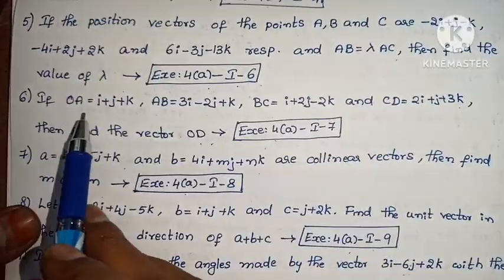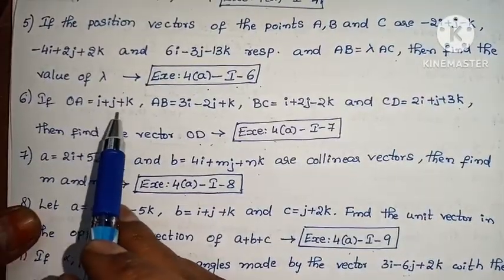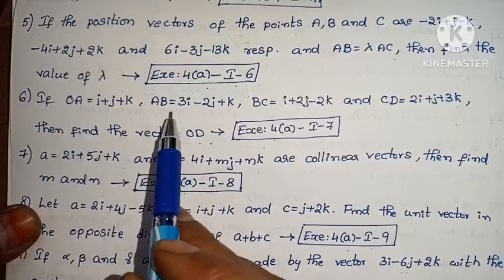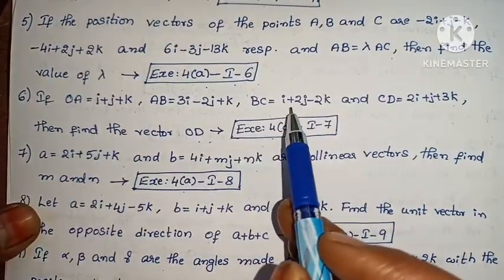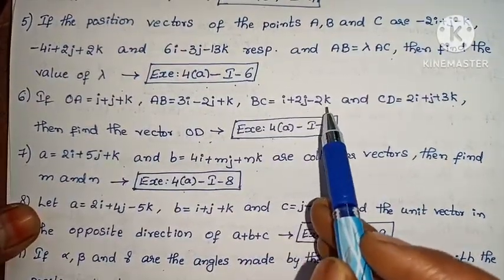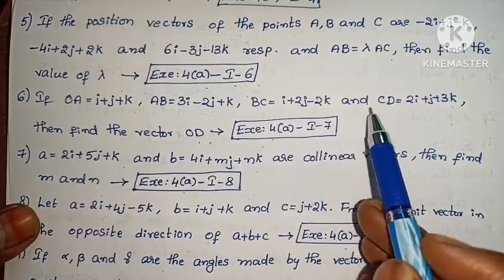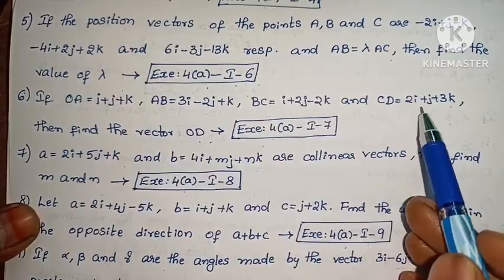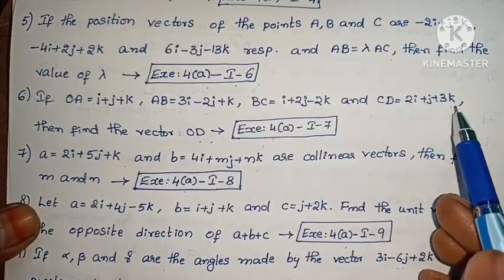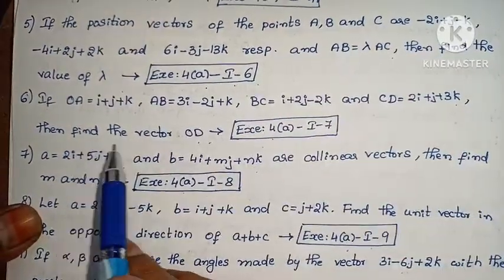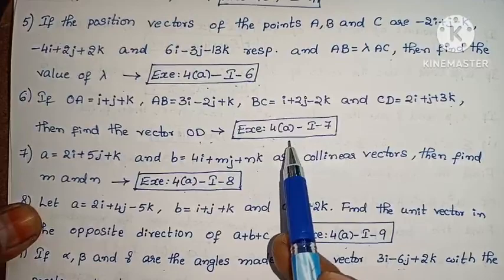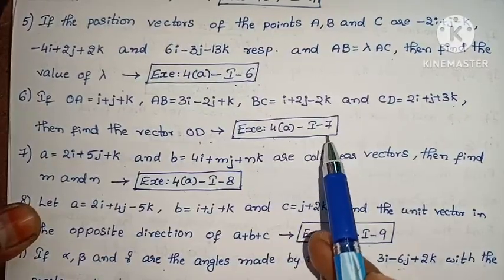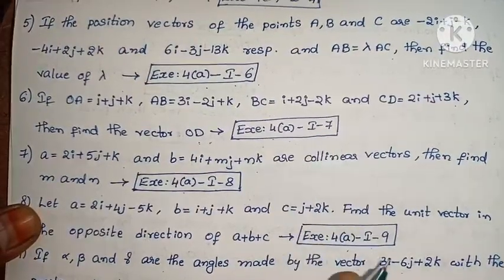Next: If OE equals to i + j + k, AB equals to 3i minus 2j + k, BC equals to i + 2j minus 2k, and CD equals to 2i + j + 3k, then find the vector OD. Exercise 4A, problem 7.